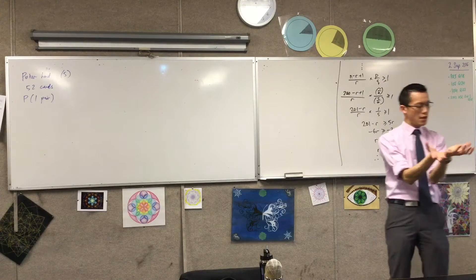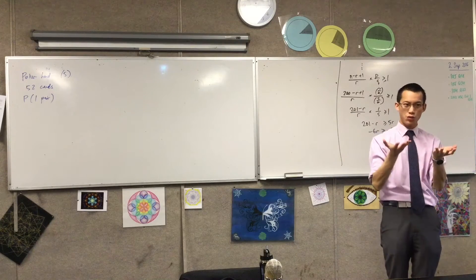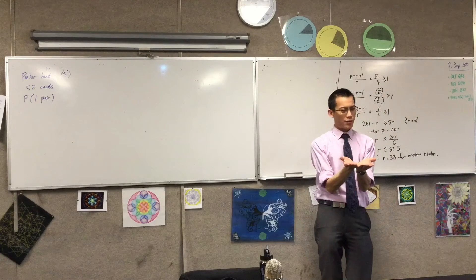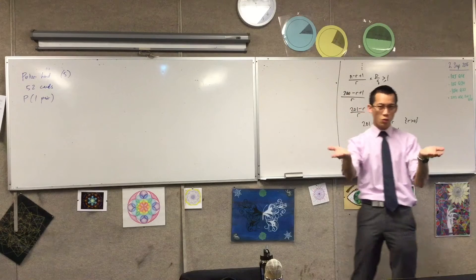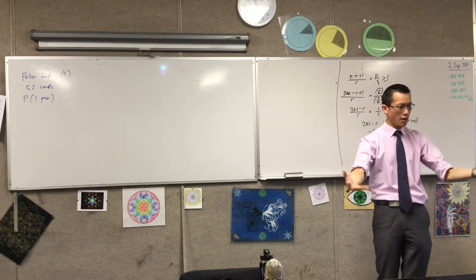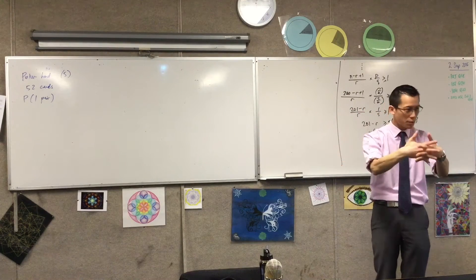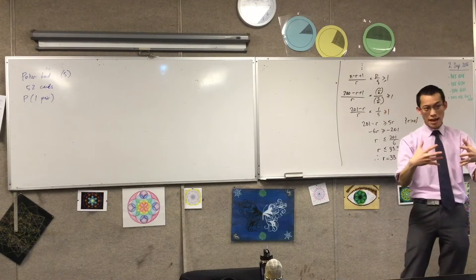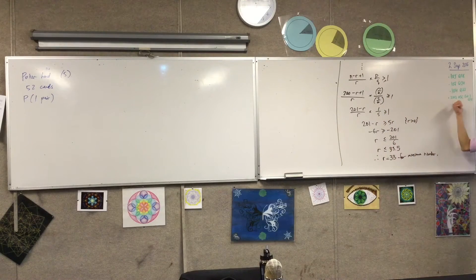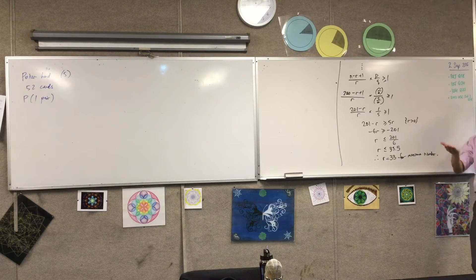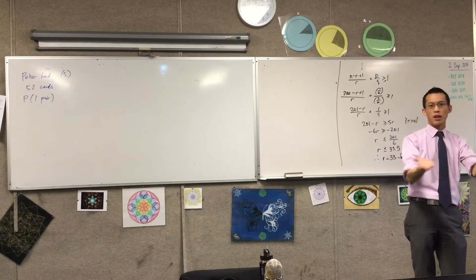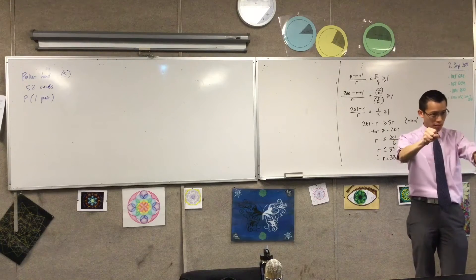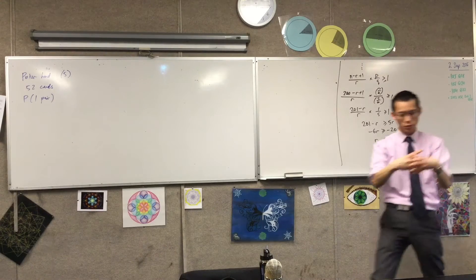The most important principle for all card-type questions is that for each of the objects, you have to choose two qualities. For cards, you have to choose a suit and a value. Think about one, think about the other, and you need both — so you multiply. This applies whenever there are two things: consider them both independently, and then multiply.